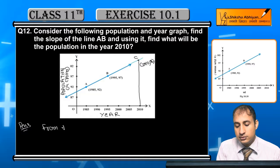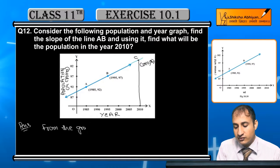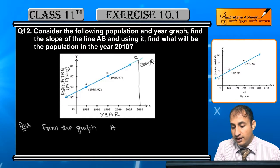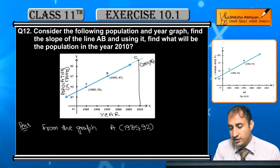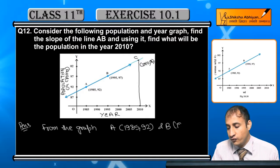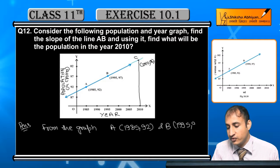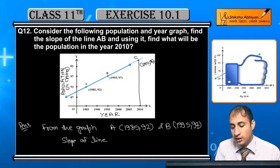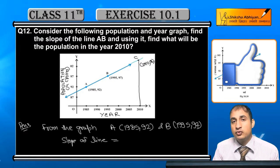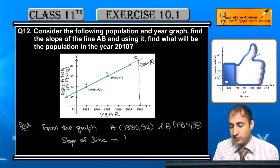From the graph, A is (1985, 92) and B is (1995, 97). So how much will the slope be? Slope of line AB. I'll take B's coordinate as x2, y2 and A's coordinate as x1, y1.